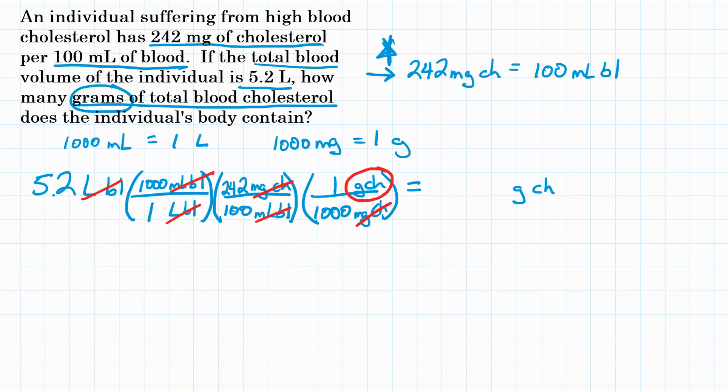So let's plug this in our calculator now. Starting with 5.2, we will multiply by the top of each conversion factor, divide by the bottom. We'll skip one because it won't change anything. So we will multiply by 1000, then multiply by 242, divide by 100, and divide by 1000, hit equals, and you should get around 12.584. Let's round that to two significant figures, and we will get 13 grams.